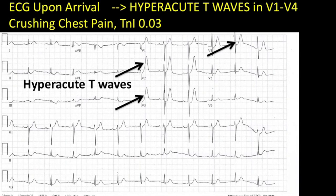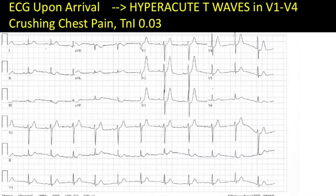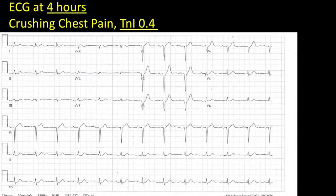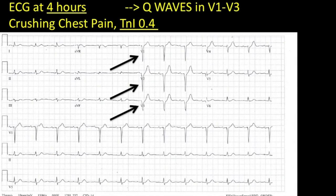So back to this initial EKG — we definitely have hyperacute T-waves. The patient was not taken to the cath lab at that time. An EKG was done again at four hours. Now the T-waves are no longer tall, but we have an even more concerning finding: Q-waves. We've gone from hyperacute T-waves to Q-waves over a four-hour period. There were no EKGs done in the interim, so it's possible that ST segment elevation occurred sometime in between. We're clearly outside of the 90-minute door-to-balloon time for PCI.